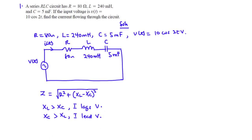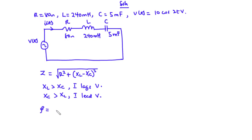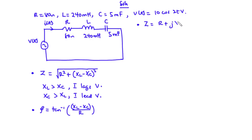If you want to find the phase angle between the current and the voltage, that is given by phi equals tan inverse of (XL minus XC) divided by R. You can also express the impedance of this RLC circuit in the rectangular form as Z equals R plus JXL minus JXC, and then convert this from the rectangular form to the polar form, which gives the impedance and the phase angle directly. Now let's find the impedance for this circuit and the current that flows through it.